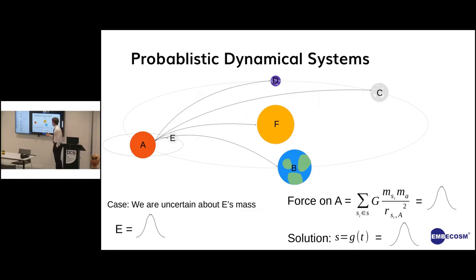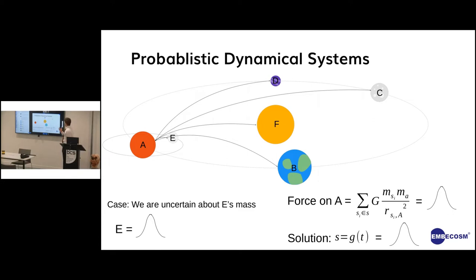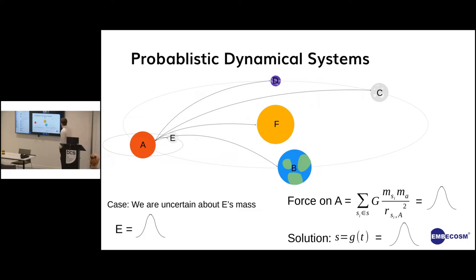Ultimately what this means is that our whole system is uncertain, and what we're getting out at the end isn't going to be a single fixed-point solution — it's going to be many solutions, each of which has an associated probability, corresponding to one particular state that E might have been in.